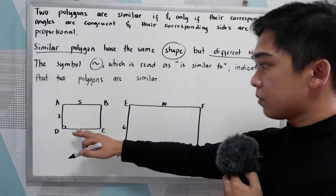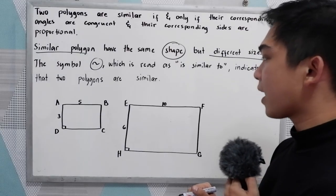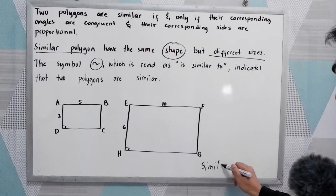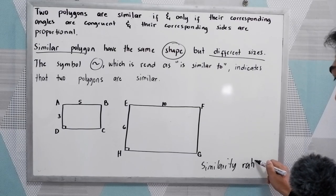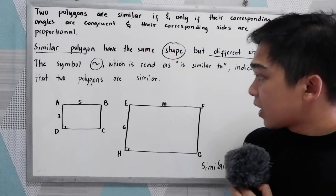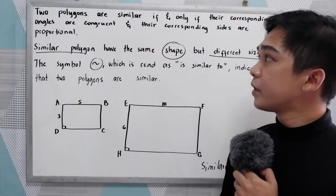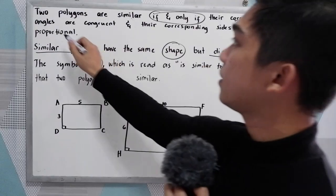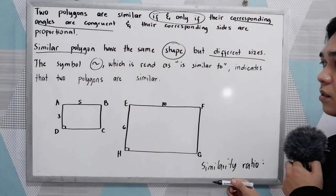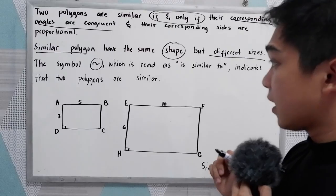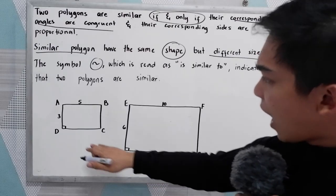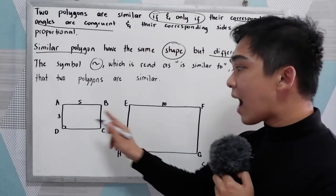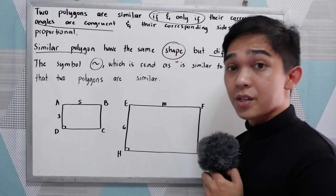Let's say we have two polygons. We're going to check the similarity ratio and check if the two polygons are similar. We can say that the two polygons are similar if and only if their corresponding angles are congruent. So let's check the corresponding angles first. Notice that our polygon is a rectangle, and by definition of a rectangle,